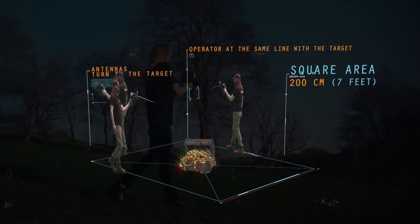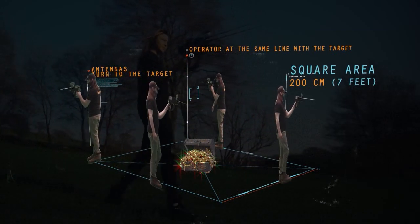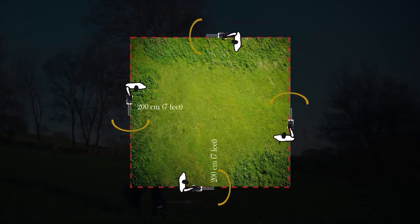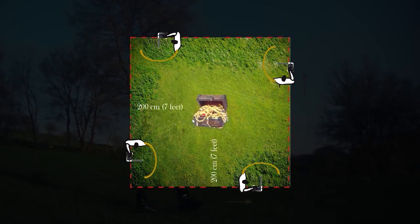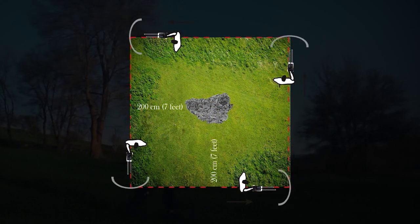When the operator is at the same line with the target, the antennas turn to the target. If the target is real, the antennas should turn to the target from all four sides. Otherwise, there is a possibility that the target is not real.